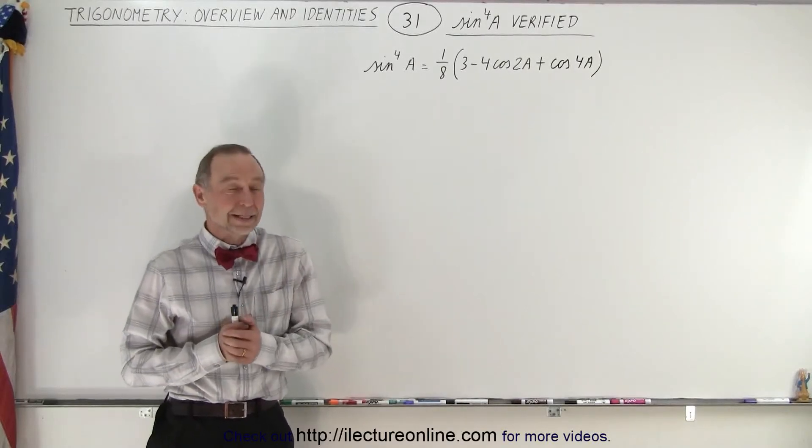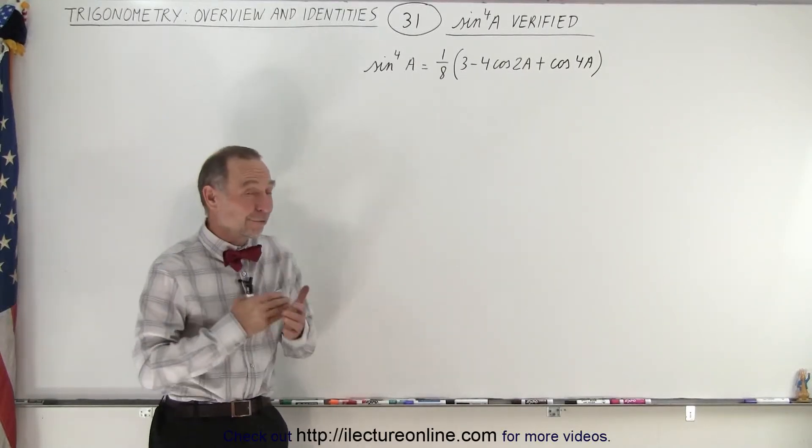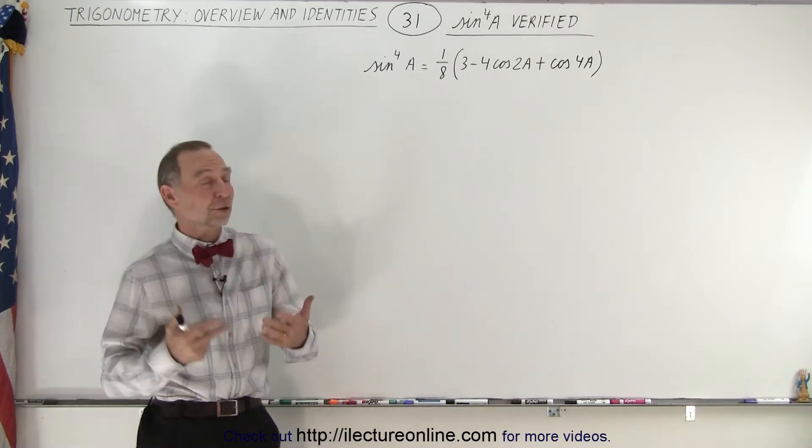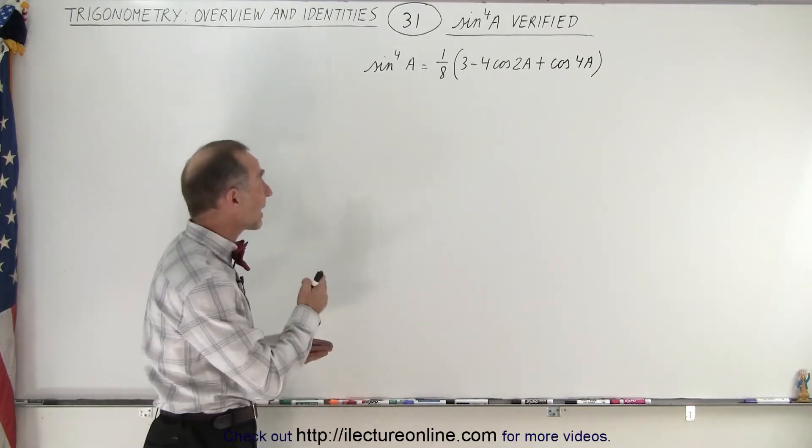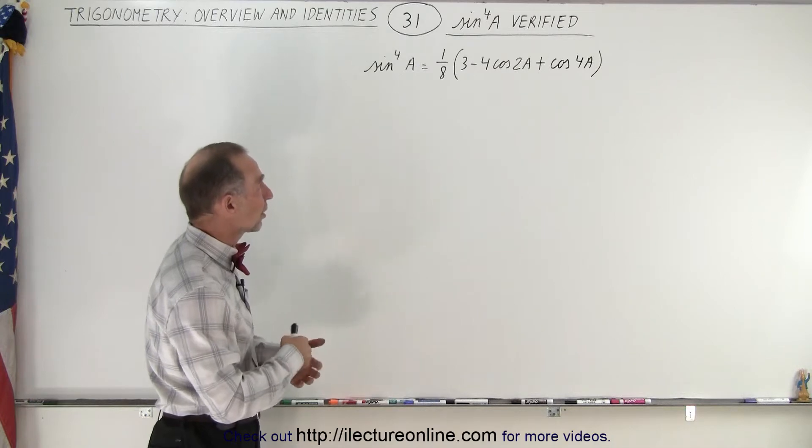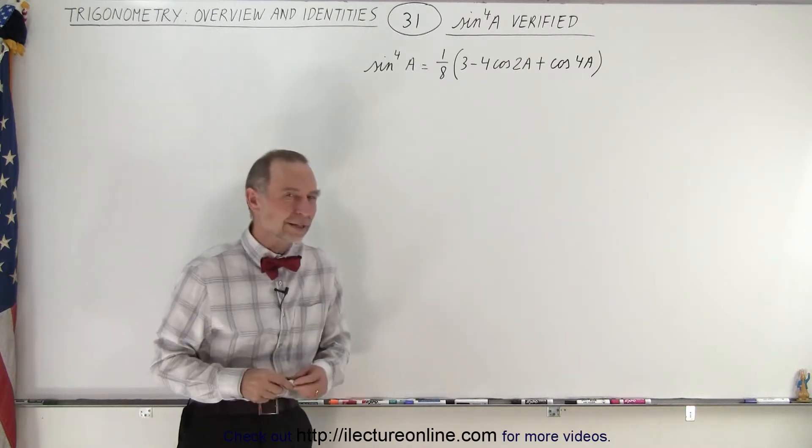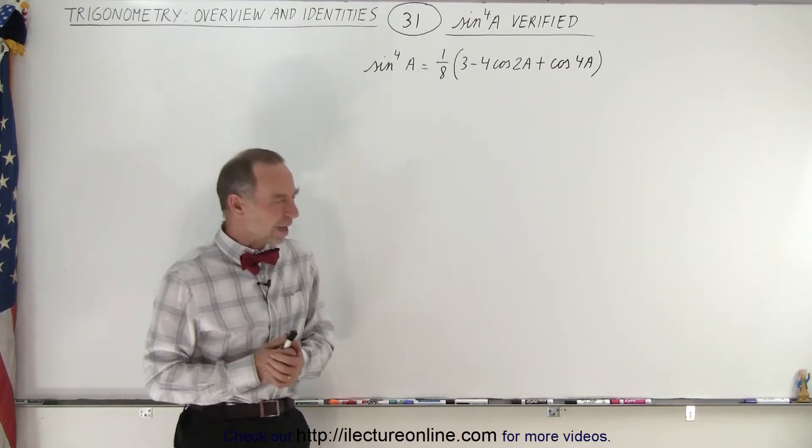Welcome to Electrum Online. Now we have the sine to the fourth power of a, and we're trying to show that that's equivalent to 1/8 times the quantity 3 minus 4 times the cosine of 2a plus the cosine of 4a. So how do we do that?